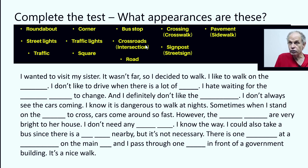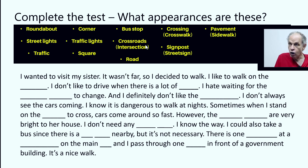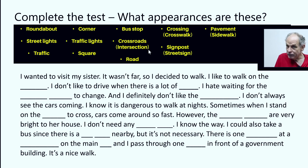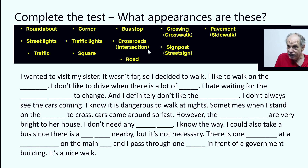I know it is dangerous to walk at night. Sometimes when I stand on the crossing to cross, cars come around so fast. However, the street lights are very bright to her house. I don't need any signpost — I know the way. I could also take a bus, since there is a bus stop nearby. But it's not necessary. There is one roundabout at a corner on the main road, and I pass through one square in front of a government building. It's a nice walk.